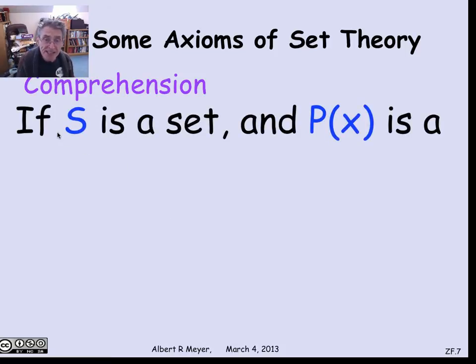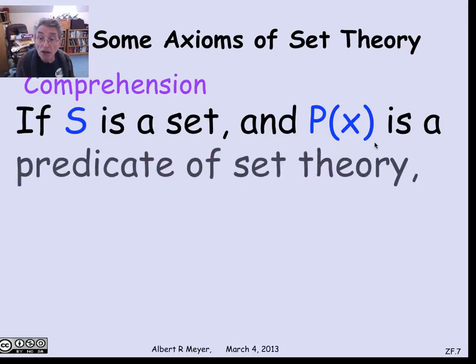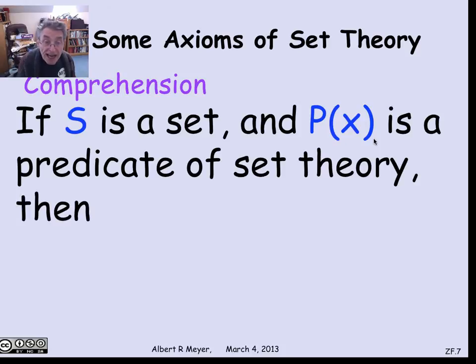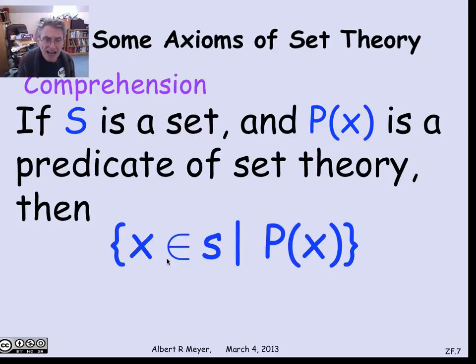Basically, it says that if S is a set and P(x) is an arbitrary predicate of set theory, which might be dangerous like x is not a member of x, nevertheless, the elements in set S that satisfy P(x) form a set. In other words, {x ∈ S | P(x)} is a set.